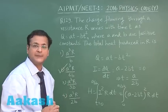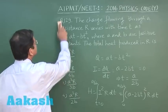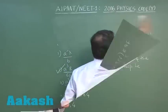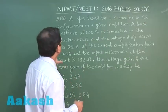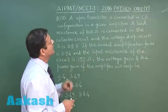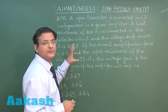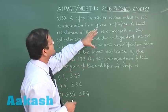Now switch over to question 130. This question 130 is based on common emitter configuration of a transistor. It says that an NPN transistor is connected in common emitter configuration in a given amplifier.